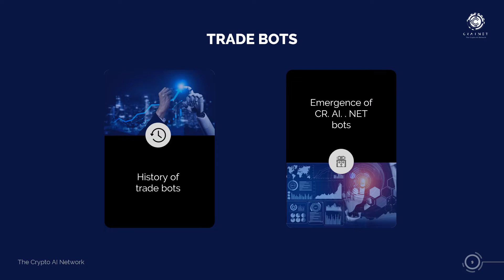Prior to that, people purchased trading systems and system developers had to support software, build websites, handle payments, and field customer calls. Today, most system-assist business is done via a monthly subscription to the signals, with the client never having contact with the developer of the system. It's been a long road from then to modern computational trade systems. The history of CrayNet is tied with the history of modern-day trading bots.